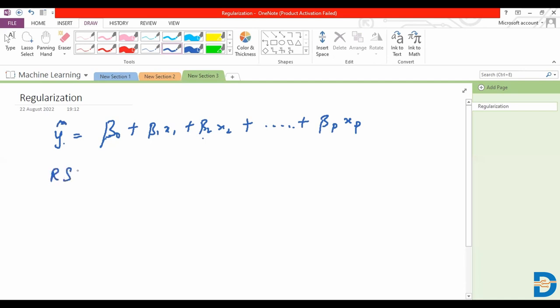Then our residual sum of squares is given by the summation i is equal to 1 to, 1 to n rather, we are talking about the number of observations. For each of these observations, we have yi, which is the actual value, minus y hat, the whole square.